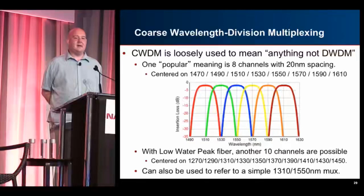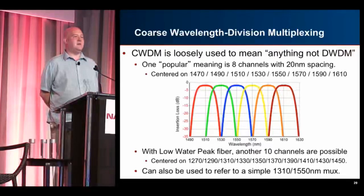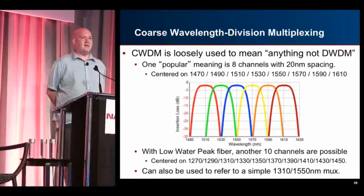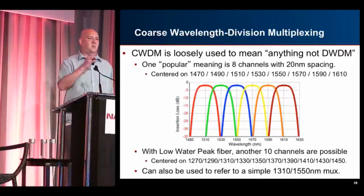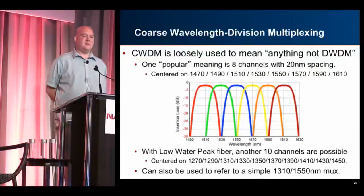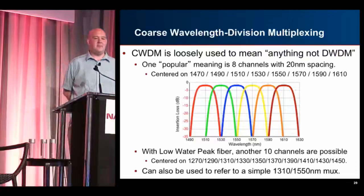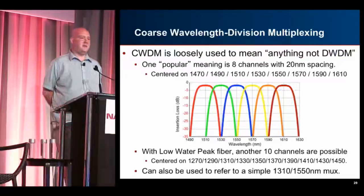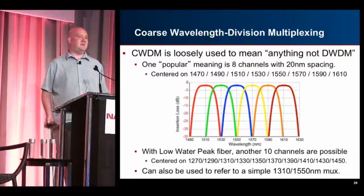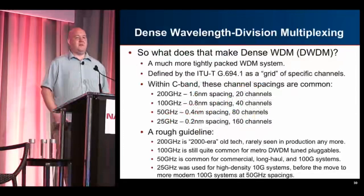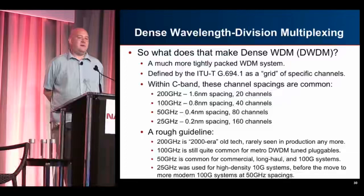The reason CWDM is cheaper is not because the signal itself is any wider — it's because the tolerances can be less precise. A laser, as it heats up and cools down, will waver in frequency, and CWDM has a much wider range to waver over, making it much cheaper to produce. If you've got low water peak fiber there are another 10 channels available in the lower spectrum. DWDM is the real standard, defined by an ITU-T standard called a grid, with many different grid sizes expressed in gigahertz.